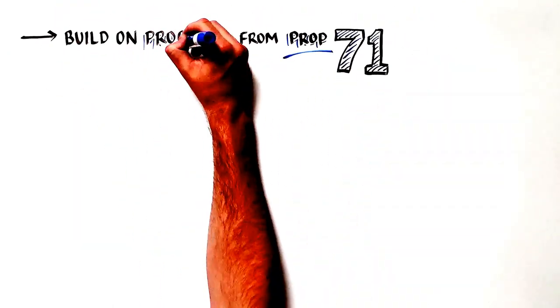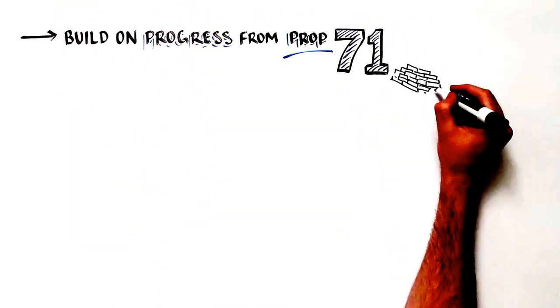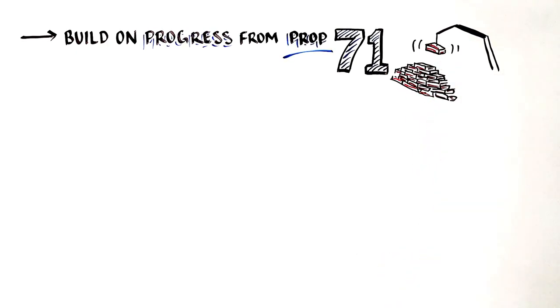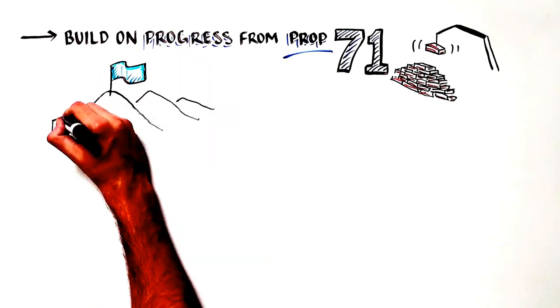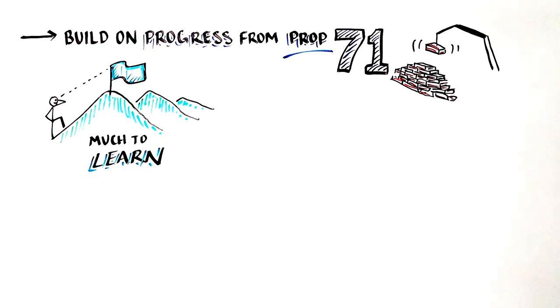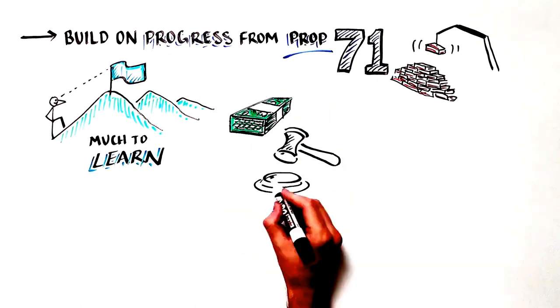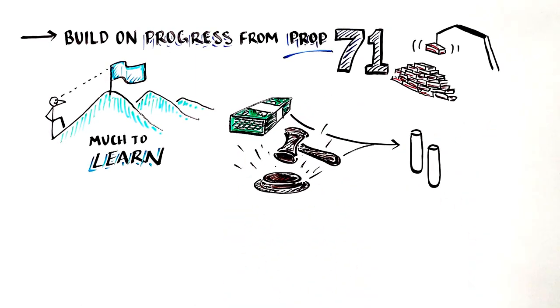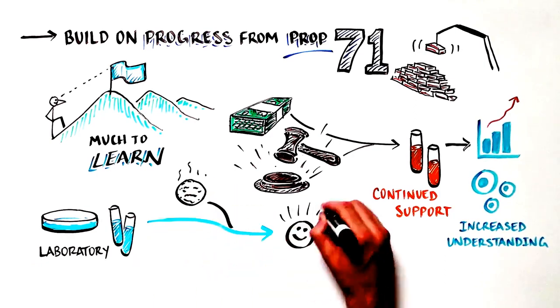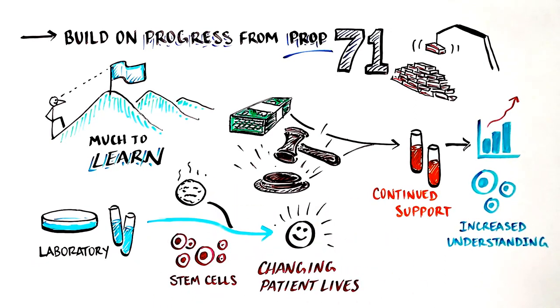As we build on the progress that California's Proposition 71 and the funding agency it created, the California Institute for Regenerative Medicine, have enabled, we must keep the momentum going, because we still have much to learn. Only with continued support for biomedical research can we increase our understanding of stem cells in the laboratory and develop meaningful treatments that change patients' lives.